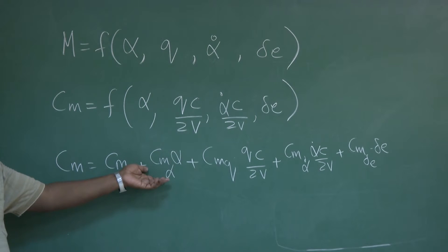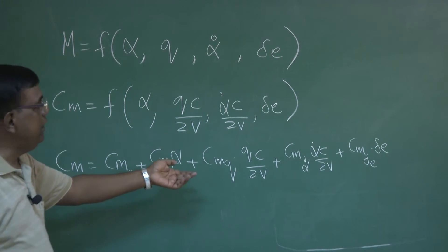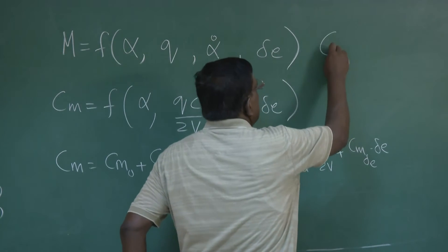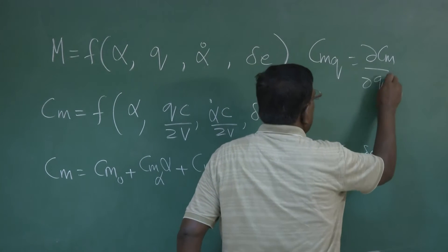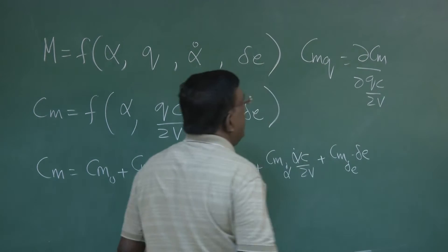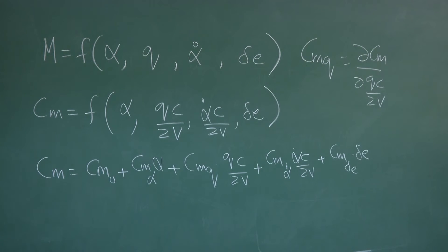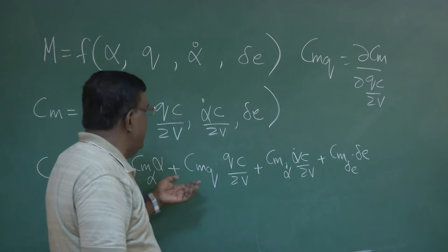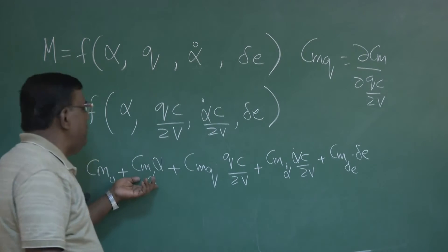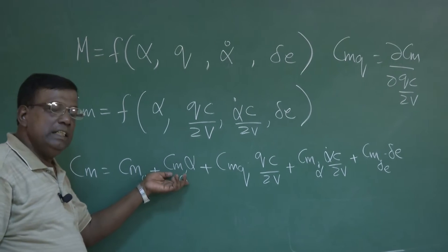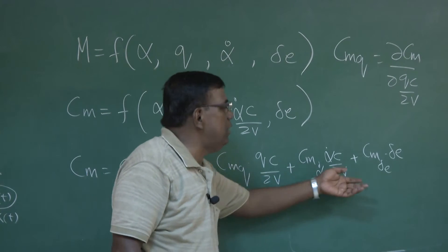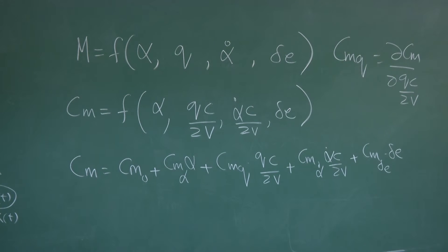What is Cm_alpha? It is dCm/d(alpha). What is Cm_q? Cm_q is dCm / d(q*c/2v). Similarly, Cm_alpha_dot is dCm / d(alpha_dot * c/2v), and Cm_delta_e similarly — these are all partial derivatives. The meaning of Cm_alpha is the change in Cm per unit change in alpha, holding all other variables constant.